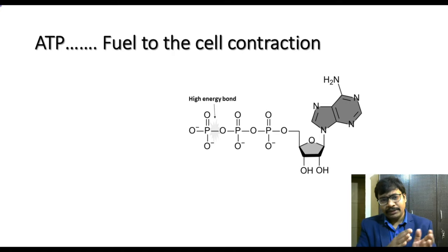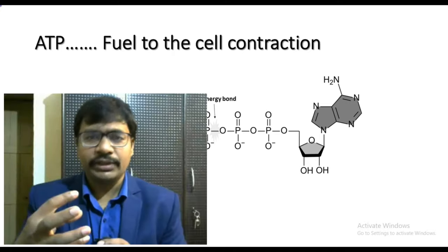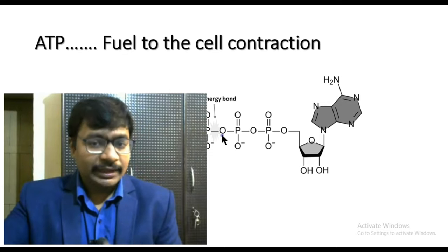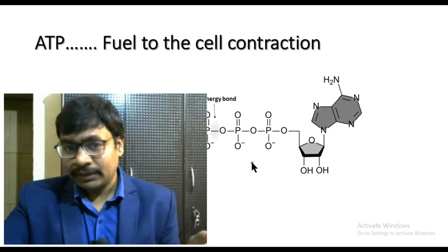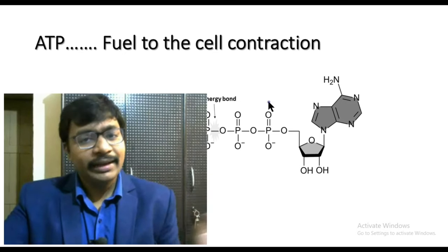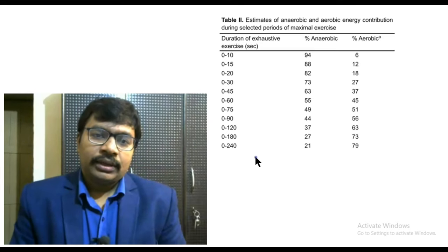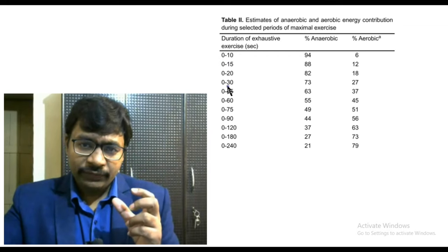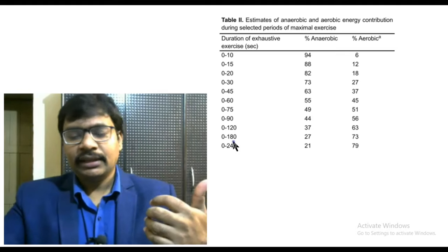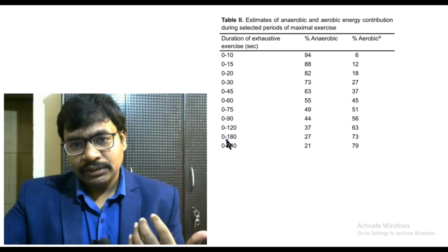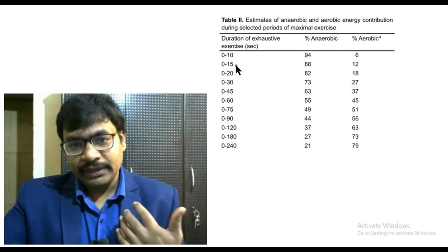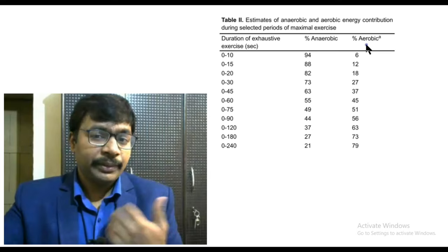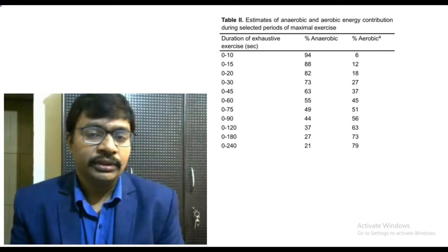The ultimate goal of any energy system is to produce ATP, which has three phosphate groups — the first phosphate group carries the highest energy, making ATP the ultimate fuel of any cell. In this slide, I will concentrate on four minutes of high-intensity exercise, examining the energy contributions across time points: 10 seconds, 15 seconds, and up to 240 seconds, showing the fractions of aerobic and anaerobic metabolic involvement.